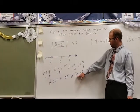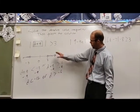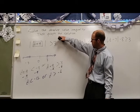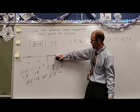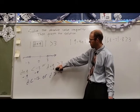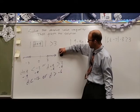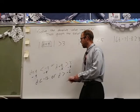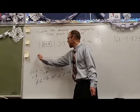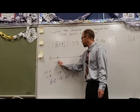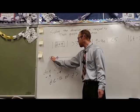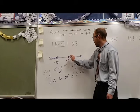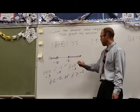Now this original graph just helped us set up the inequalities — these are not our solutions. I'm going to erase that and graph the actual solutions. d is less than negative 12: open circle at negative 12, shaded to the left. d is greater than negative six: open circle at negative six, shaded to the right.